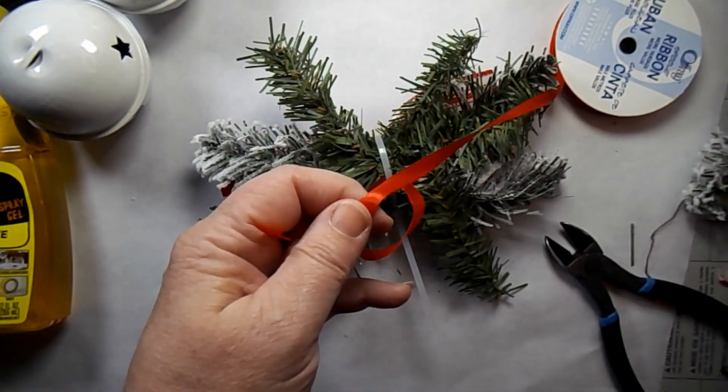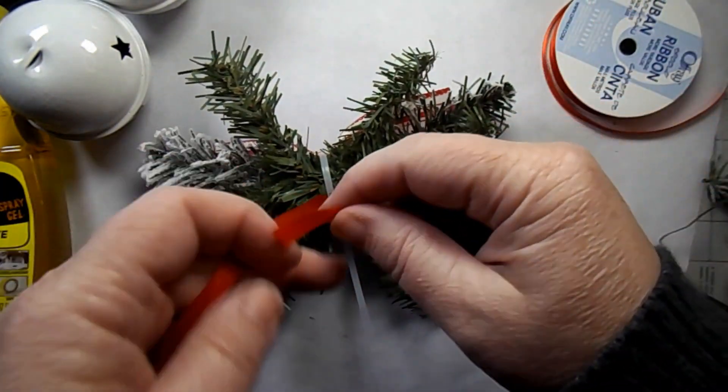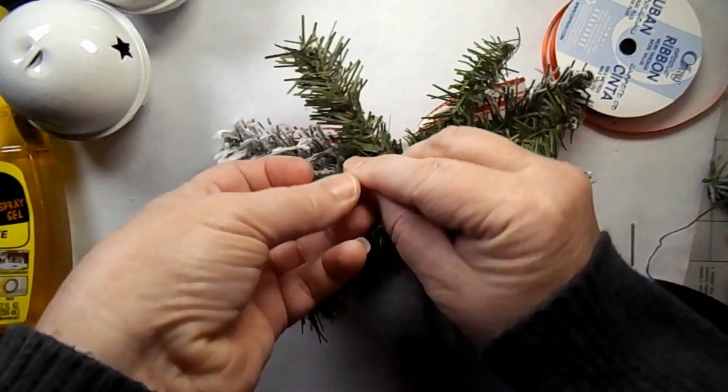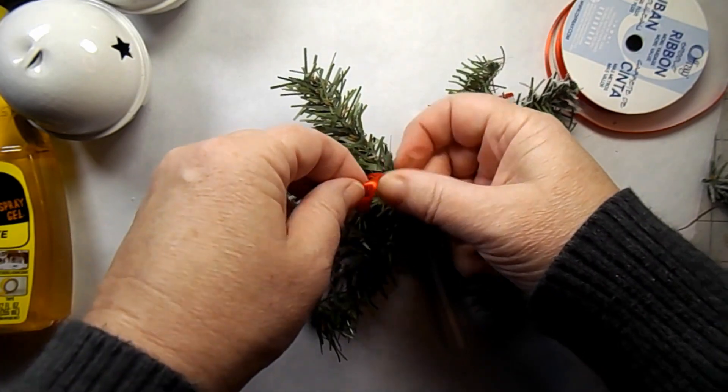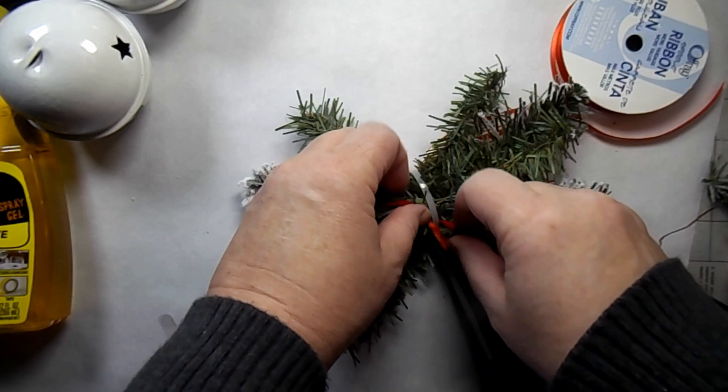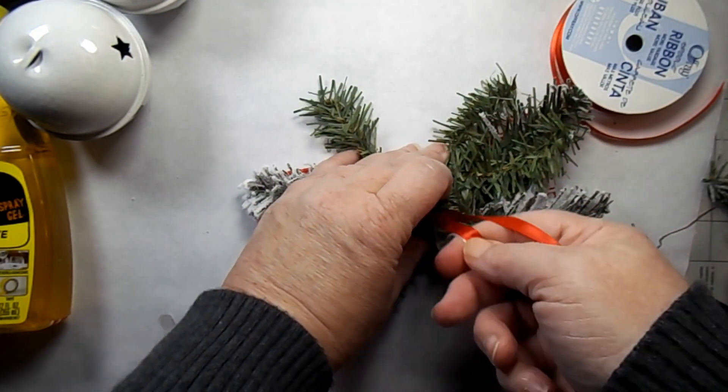Now I'm taking some ribbon. This will be my hanger. And just going to tie a knot at the end. All right, pretty easy so far, right? We just grabbed a couple things from the Dollar Tree. If you have a garland and some ribbon, this is easy to do.